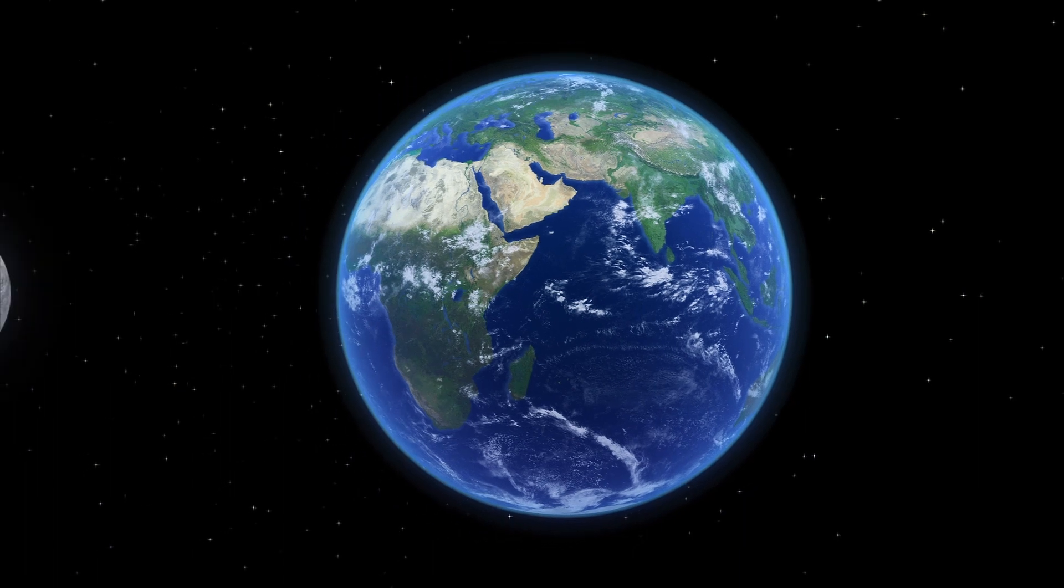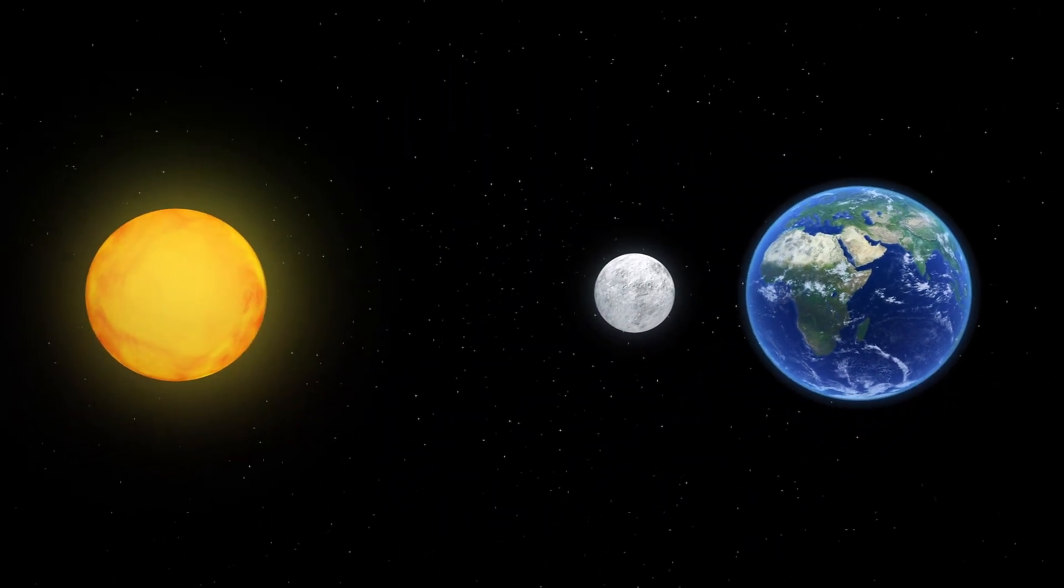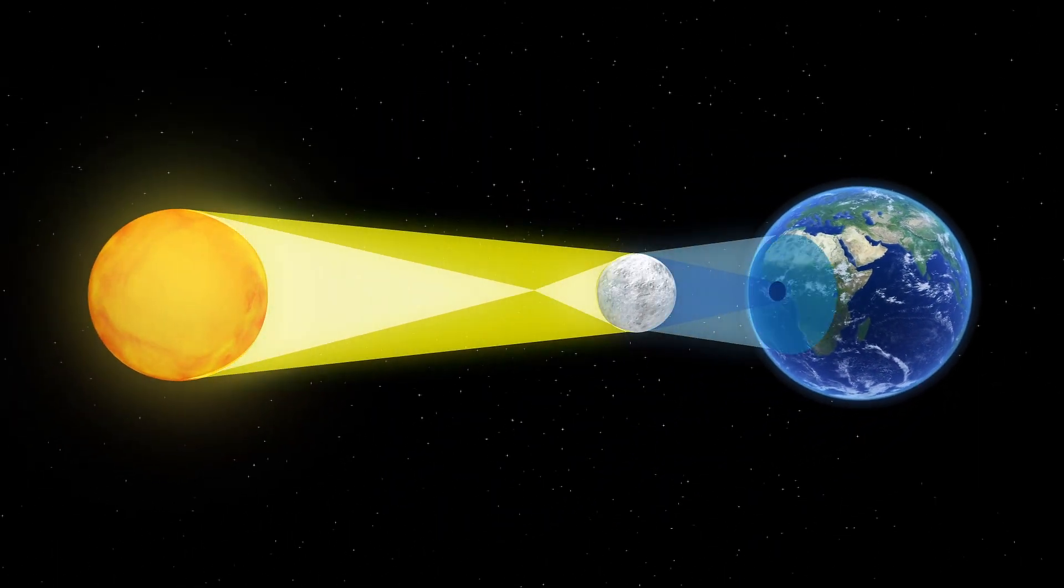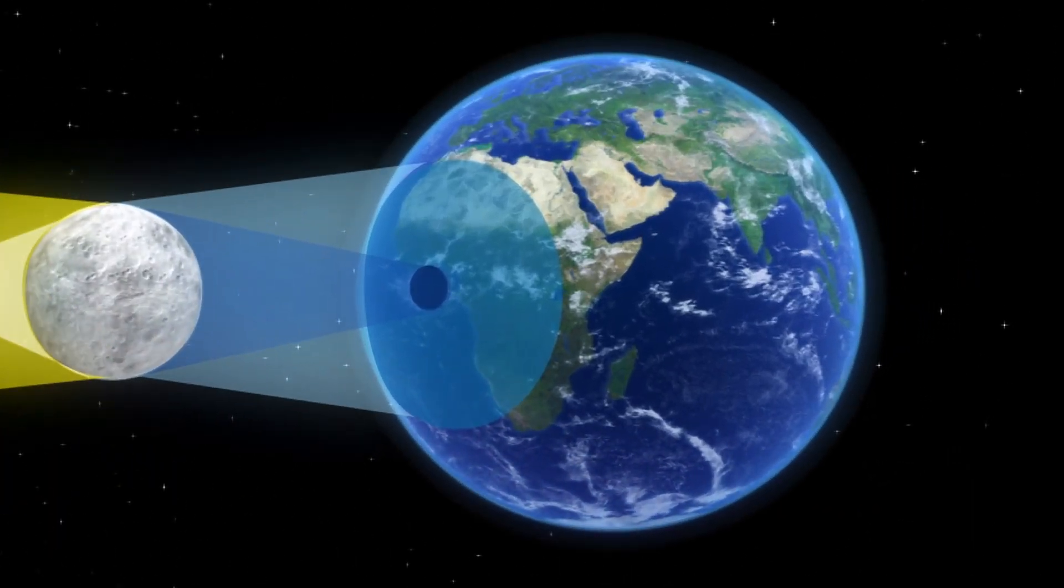A total eclipse occurs when the Sun, Moon and Earth are in a direct line. It's only visible from a small area. Those who see it are in the center of the Moon's shadow when it hits Earth.